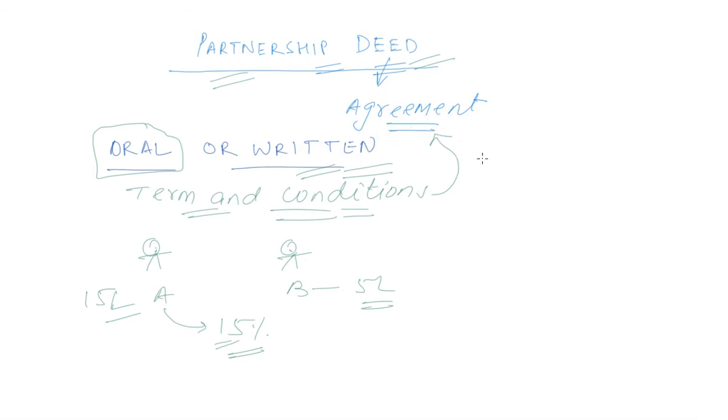And A is saying that we had agreed orally to have interest on capital of 15% which may or may not be remembered at the end of the day. So, it is always better to have a written agreement. If they are going to have written agreement then these old terms and conditions about how much interest, how much salary, how much share of profits, all these will be in this agreement.